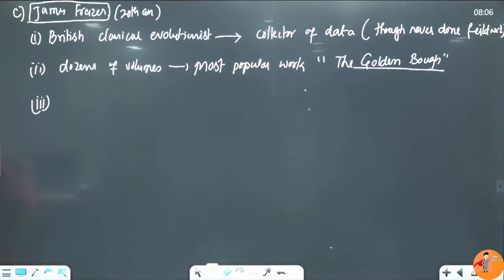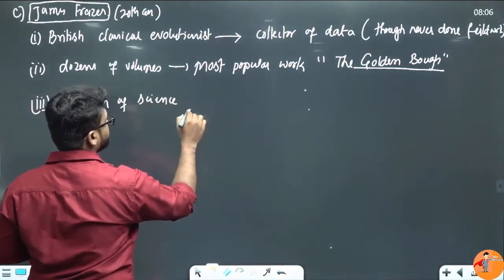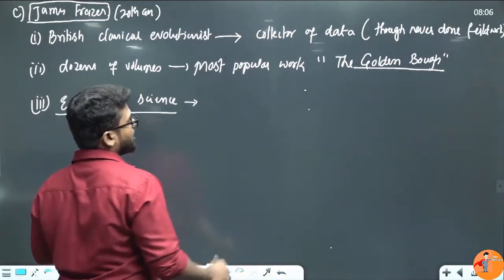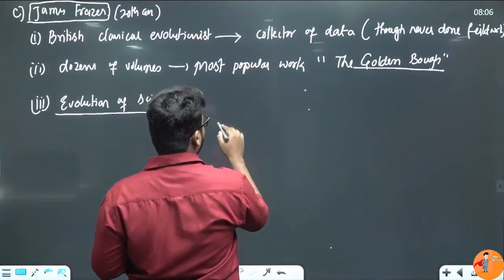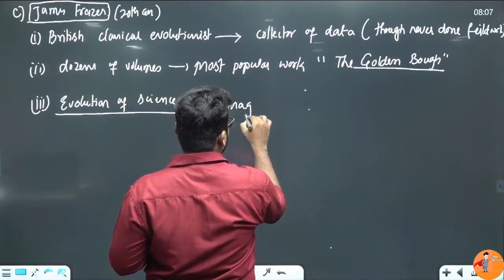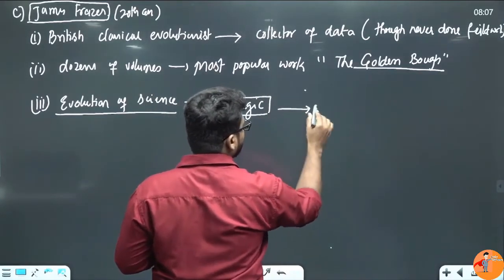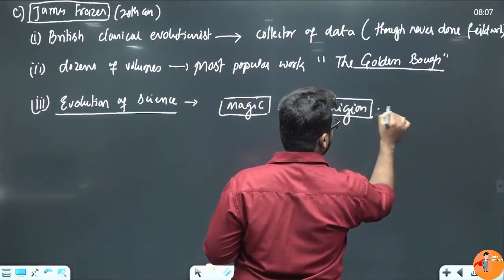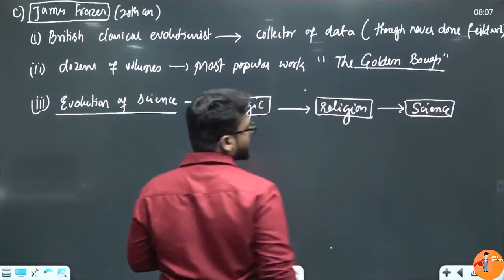His greatest contribution is evolution of science. According to him, the evolutionary trend is: magic led to religion, and religion led to science. This is what he said. And on the basis of it, we can understand the evolution of science.